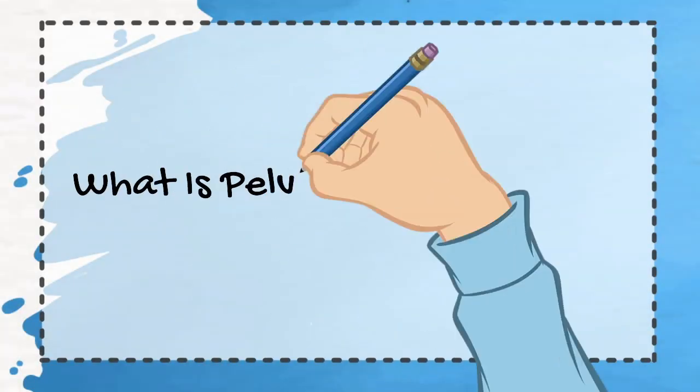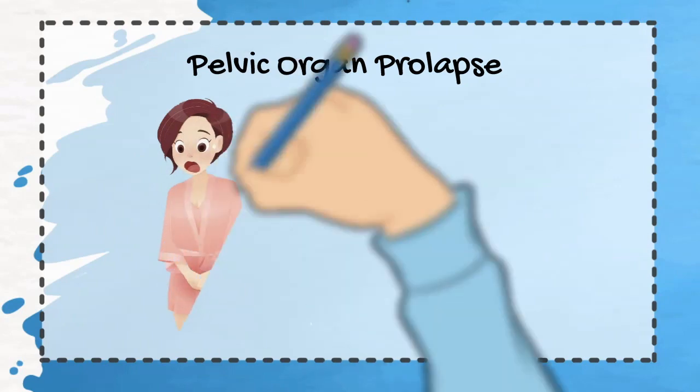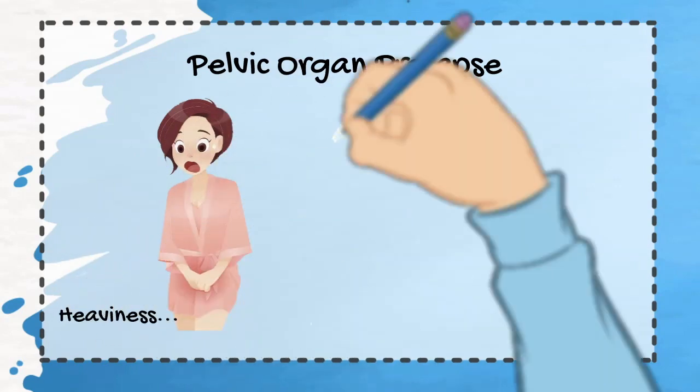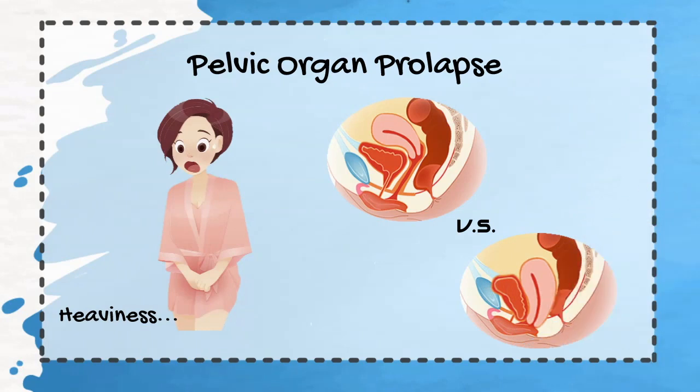Have you experienced a feeling of heaviness with prolonged standing or something bulging out of the vaginal openings with bowel movements? This could be a sign of pelvic organ prolapse and indicate lack of support for the pelvic organs.